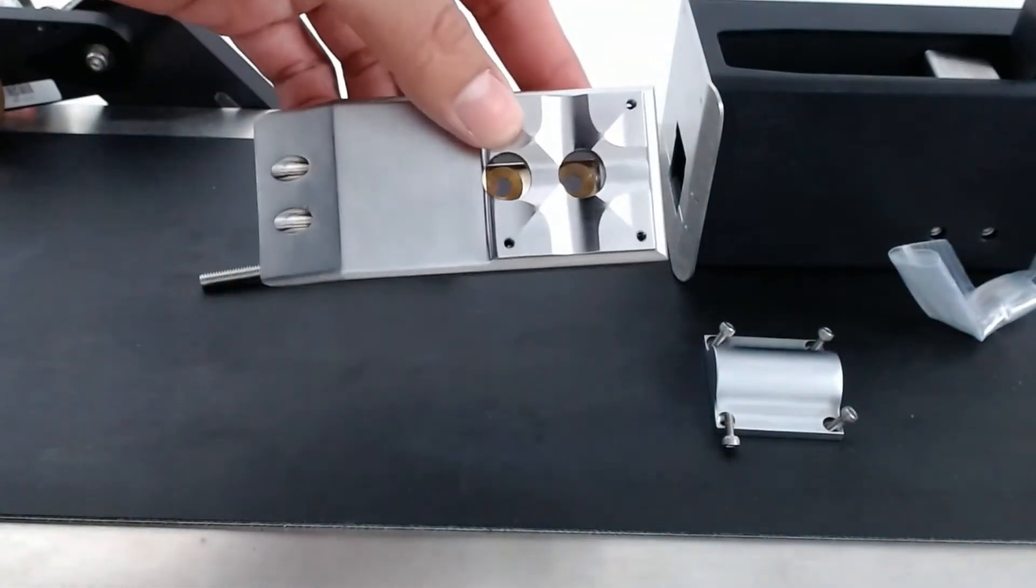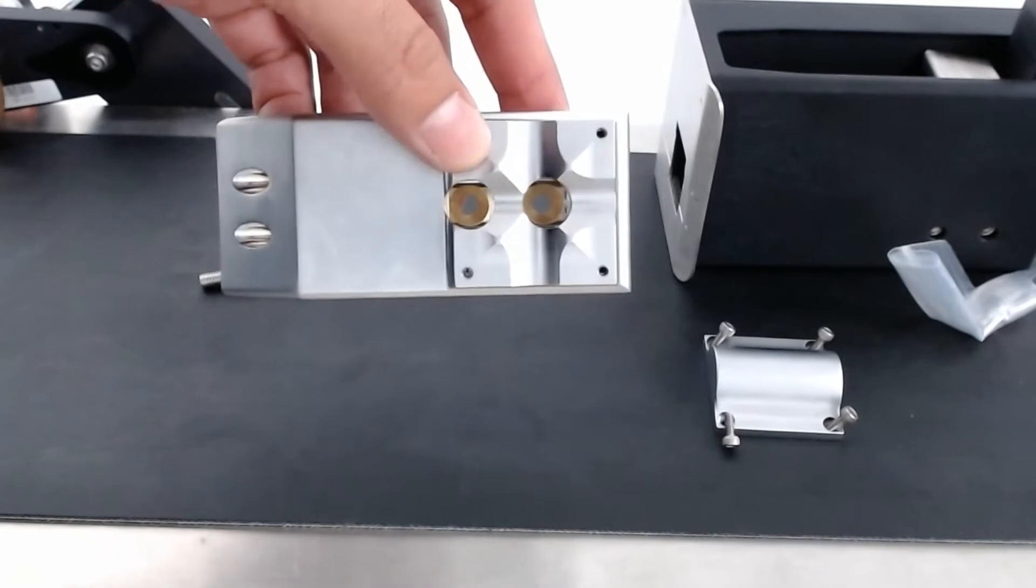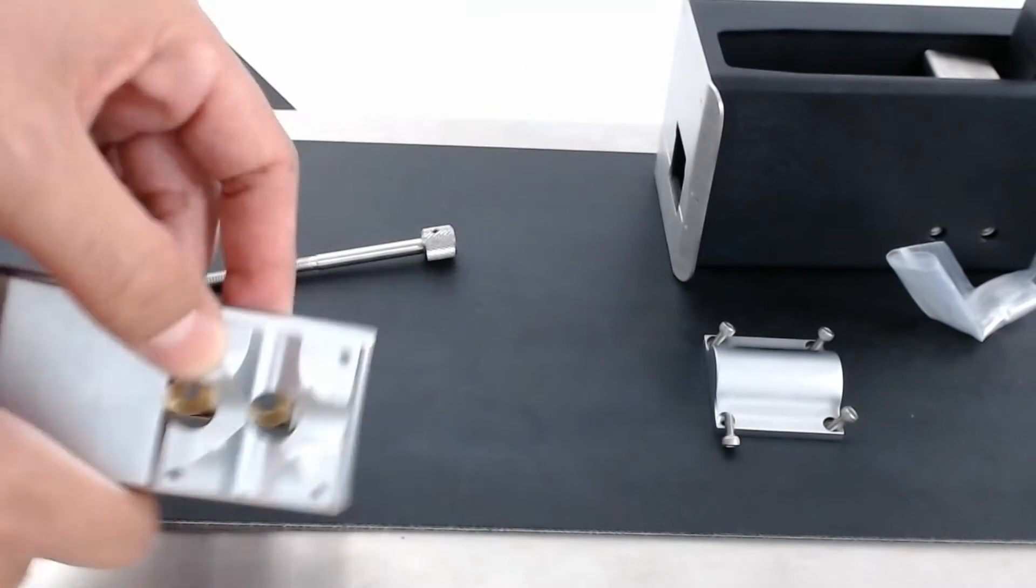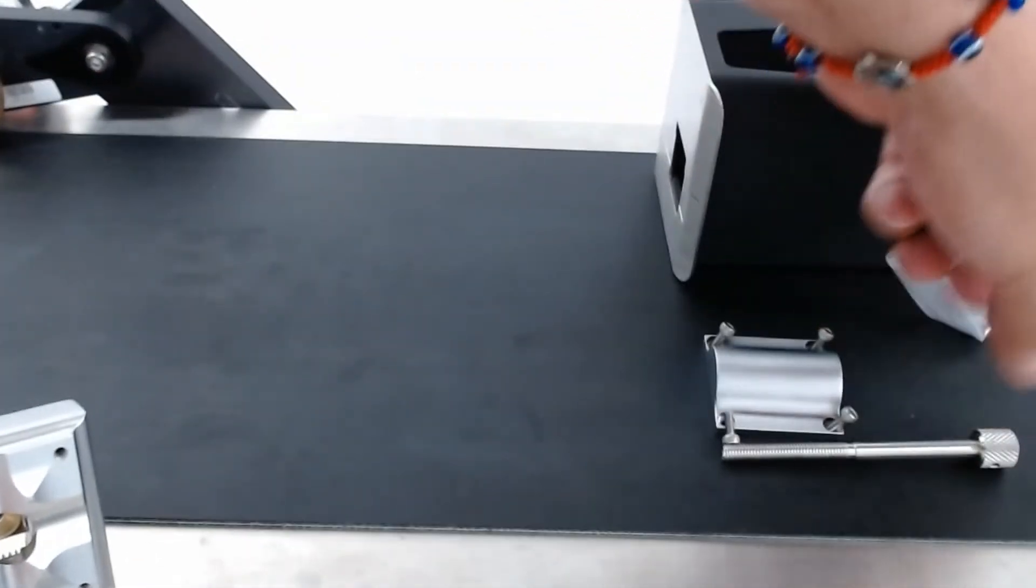And now this is where those two screws come into play. So if you look in here, you'll see we have two screw holes and this is for mounting this piece to the printer. So let's go ahead, slide this stuff to the side here.